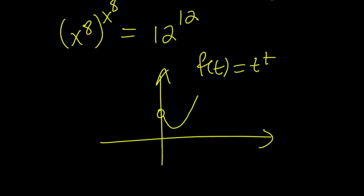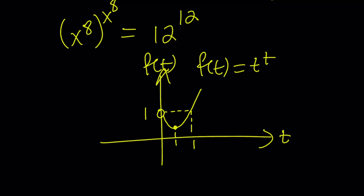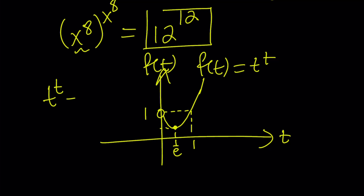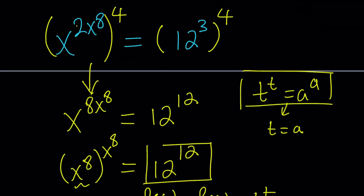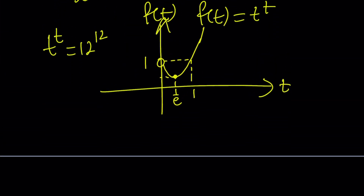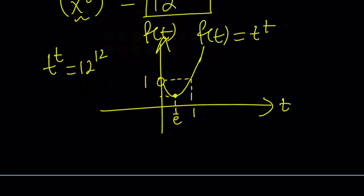The function f(t) = t^t looks like this. We have the point (1, 1). There's a hole because 0 to the 0 is not defined for this function. The function has a minimum that occurs at 1 over e, with value 1/e to the power 1/e. Our value has t to the t equals 12 to the 12, which is a very large number — 1728 raised to the 4th power is in the billions. The horizontal line y = 12^12 intersects the graph at a single point, meaning we have one solution. That t value is t equals 12, and since t is x to the 8th, we conclude that x to the 8th equals 12.